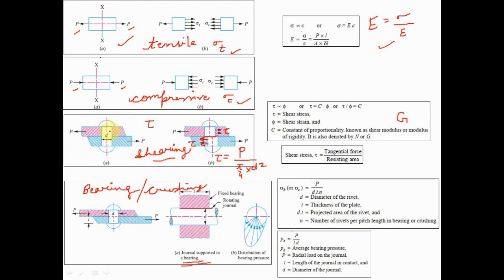Consider a rivet joining two plates. The tangential force acting on the two plates is denoted by P. The internal resistance — the internal stress generated in response — is denoted by tau, which represents shear stress. Tau counters the external force, but at one particular stage when the external force exceeds the internal shear stress, shearing happens: the component fails, and the rivet breaks into two parts along the plane joining the two plates.